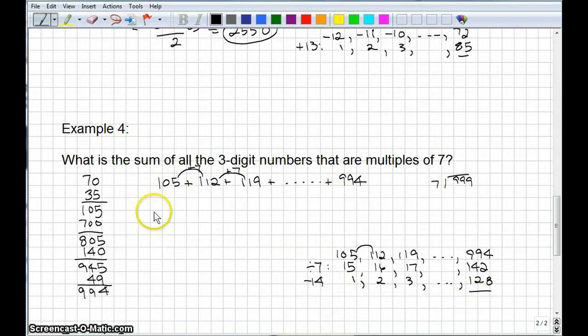So now all we need to do is figure out the sum. So the sum is equal to 105 plus 994 times 128, the number of numbers, all over 2. And if you figure that out, you get 1099, that's 105 plus 994, and we can divide 128 by 2, that's 64. So we multiply those two numbers together, and we get 70,336.